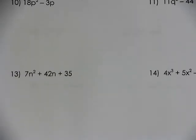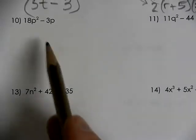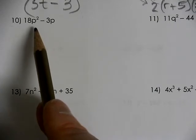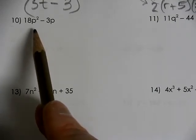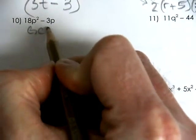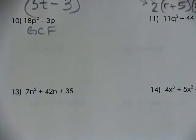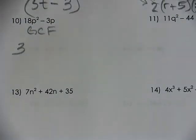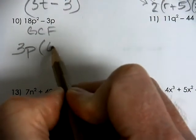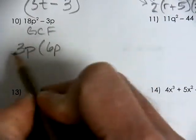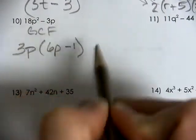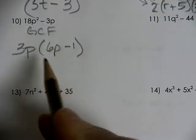Number 10 can be a little complicated just because it's so simple — you're looking for a GCF, and that's all we can do here. A 3 goes into both numbers, and there's a P in both terms, so we factor out 3P. That leaves 6P, because 3 times 6 is 18, and P times P is P squared, giving 3P(6P minus 1). You have to have that minus 1.